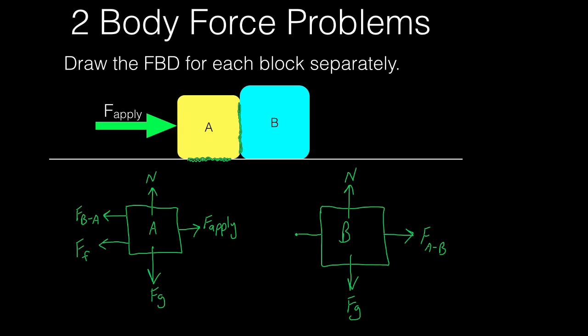Now let's think about what force would be going left on block B. There's only one force on block B going left, and that's the force of friction — the force caused between the block and the ground. There's not another block on that side, so that's the only leftward force on block B. That's how you set up these two-body force problems: make a separate free body diagram for each block. If there were another block, we could call it block C and do another separate free body diagram.